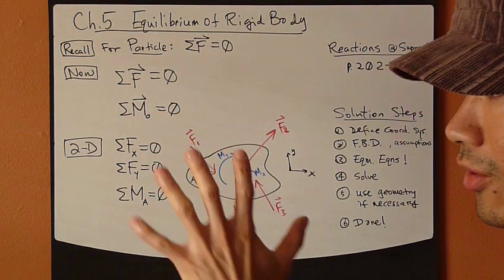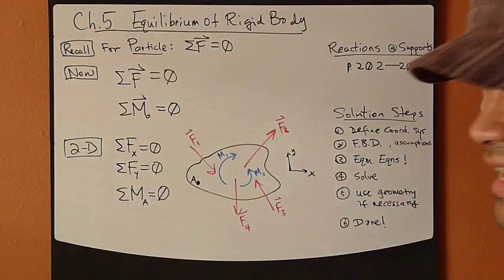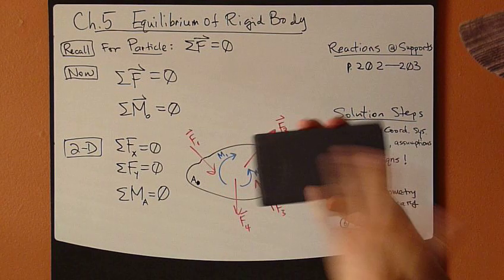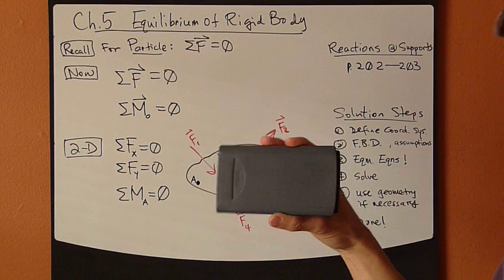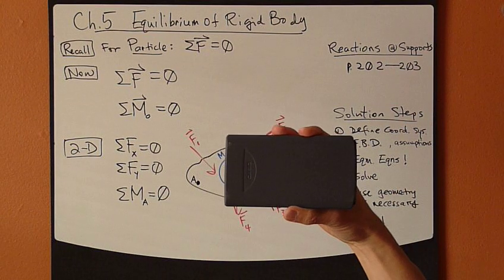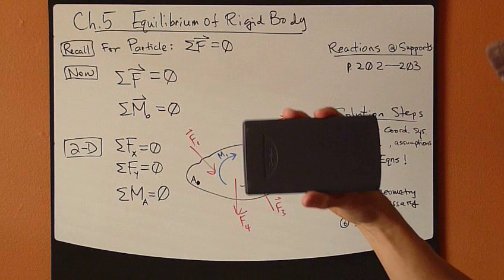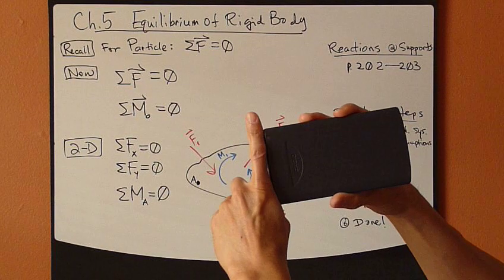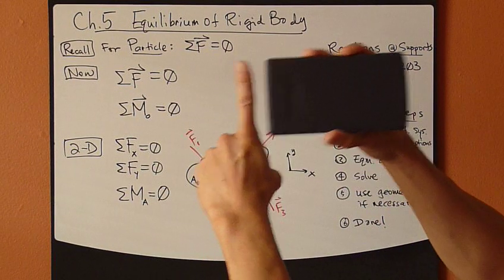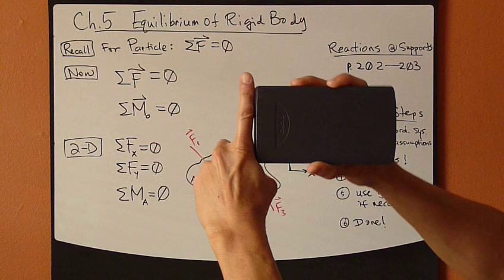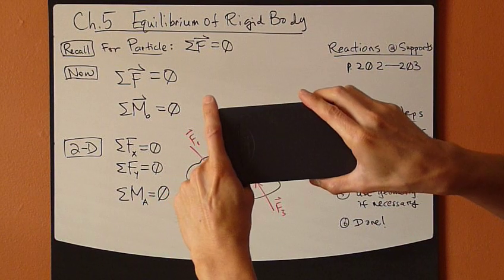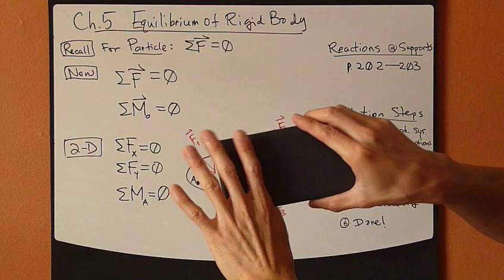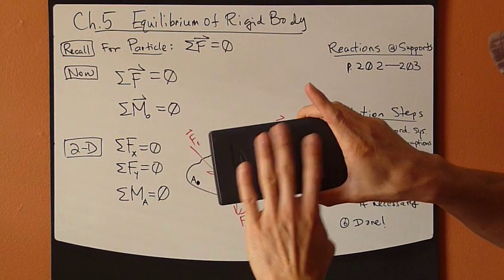Even though the actual rigid body may not be rotating — like a calculator, which can be considered a particle if rotation doesn't matter — as a rigid body, we need to consider the tendency to want to rotate. Let's say if I pivot it at this point on the left-hand side, or it's glued to a wall. If I apply a force down here, the tendency for this rigid body to want to rotate must be taken into consideration.